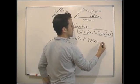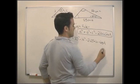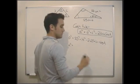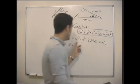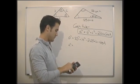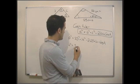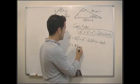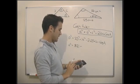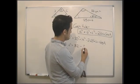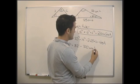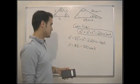Times cos A. So let's work through it: a squared equals 25 squared plus 14 squared, which is 821, minus 2 times 25 times 14, which is minus 700, times cos A.